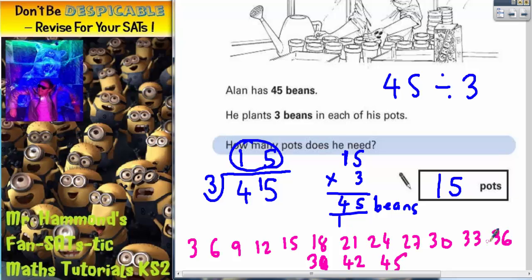So now we've counted up in 3s, we'll just count the pots. So that would be 1, 2, 3, 4, 5, 6, 7, 8, 9, 10, 11, 12, 13, 14, 15 lots of 3. So 15 pots. This gives us the same answer here.